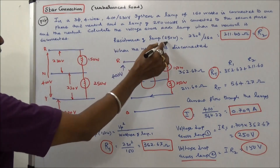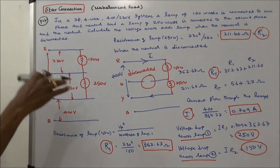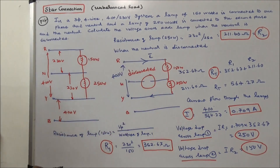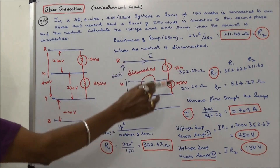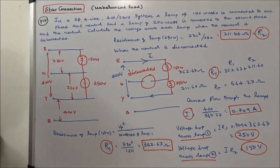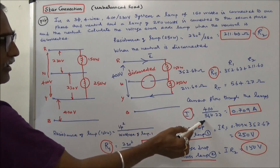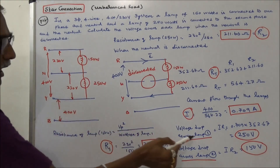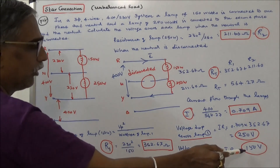Similarly, the resistance of lamp 2 at 250 watts is 230 squared divided by 250, equal to 211.60 ohms. When the neutral is disconnected, these two lamps are connected in series with 400V across them. Total resistance is 352.67 plus 211.60 equals 564.27 ohms. Current through the lamps is 400 divided by 564.27, equal to 0.709 amps. Voltage across lamp 1 is I times R1, equal to 250 volts. Voltage across lamp 2 is I times R2, equal to 150 volts.